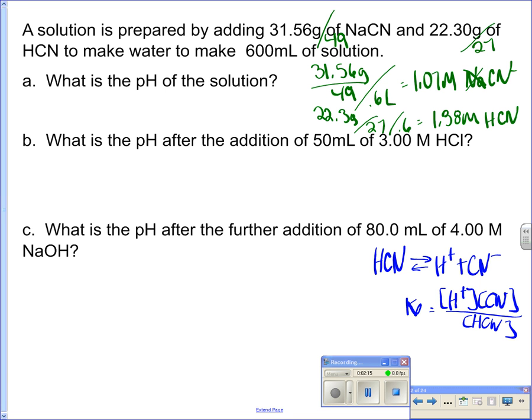So as long as I have these values, then it's easy to calculate the H+. So when we start this problem, it's very similar to an x-squared over initial. The only deal is that we have a common ion, we have some CN. Normally, we just have HCN, and we don't have any of the salt hanging around, but in this case we do, or the conjugate base.